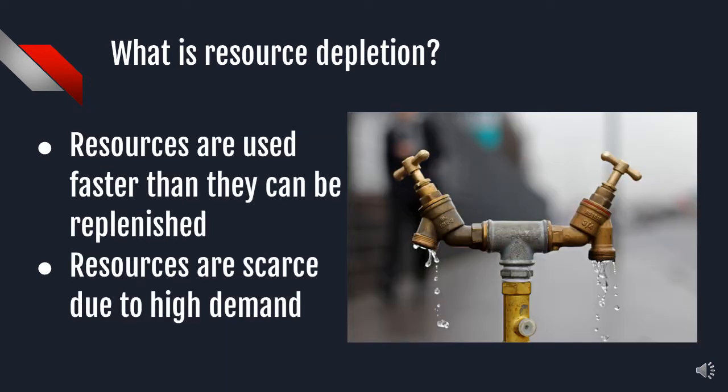One might ask, what is resource depletion? Resource depletion means that resources are being used faster than they can be replenished. This makes the resources become scarce due to high demand. This natural phenomenon is known as resource depletion.